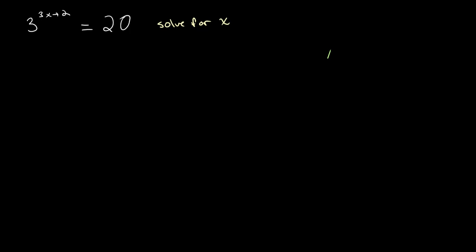Now as you can see here we can't make both of these sides have the same base. So we want to once again use logarithms. And if you remember what we did last time is we took lg of both sides. So let's say that we take lg of 3 to the power of 3x plus 2, and then to keep both sides equal we write this is equal to lg of 20.